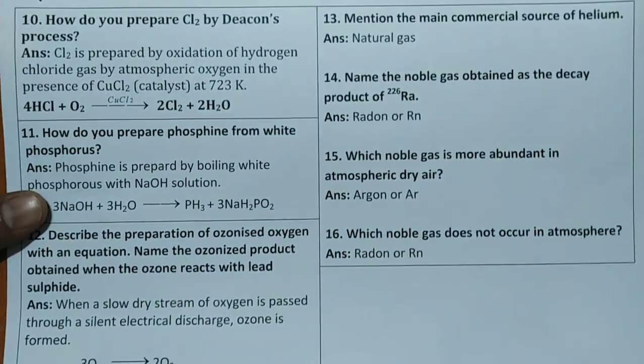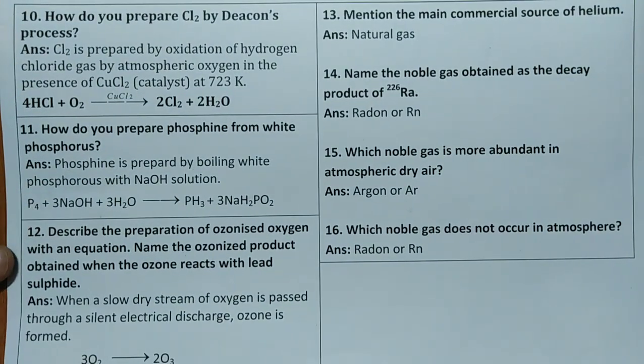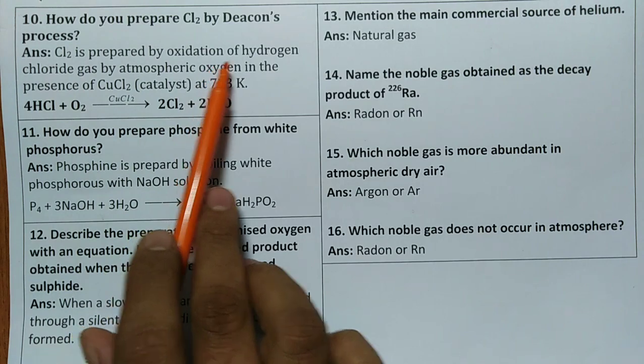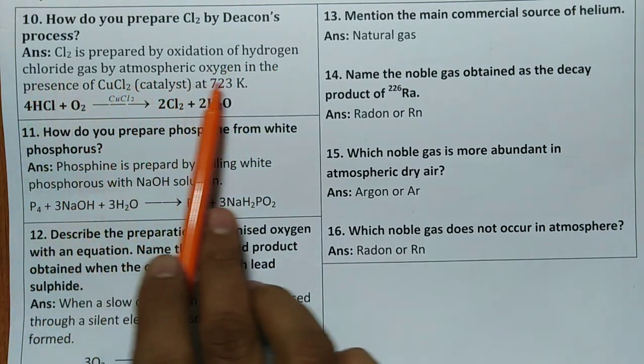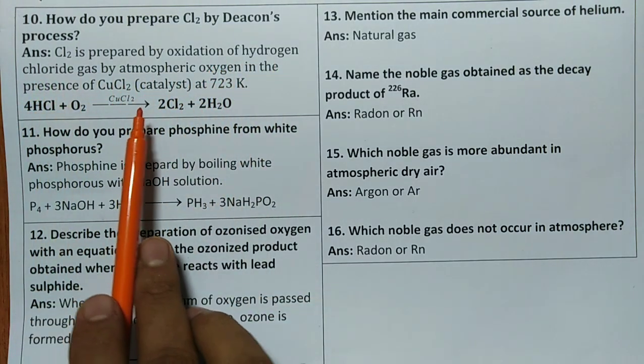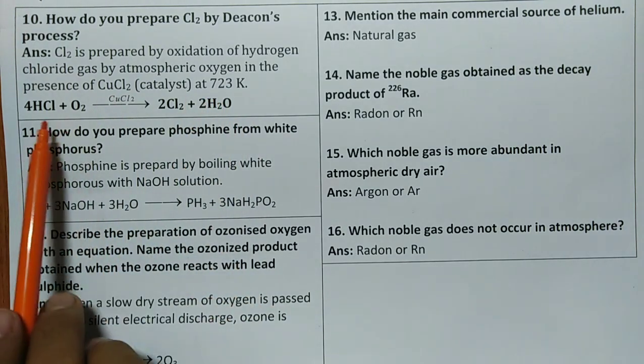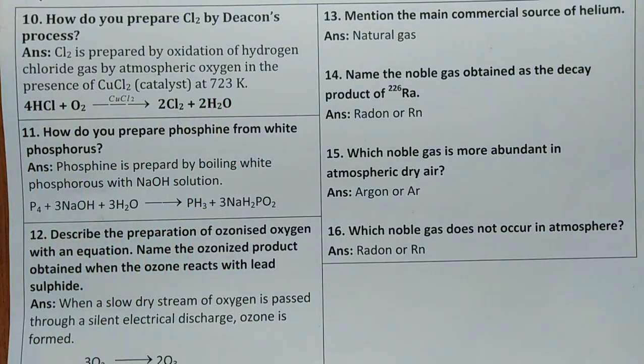Then tenth question. How do you prepare Cl2 by Deacon's process? Cl2 is prepared by oxidation of hydrogen chloride gas by atmospheric oxygen in the presence of CuCl2 as a catalyst at 723 Kelvin. Temperature catalyst both important. 4HCl plus O2 gives 2Cl2 plus 2H2O. This is another important question.